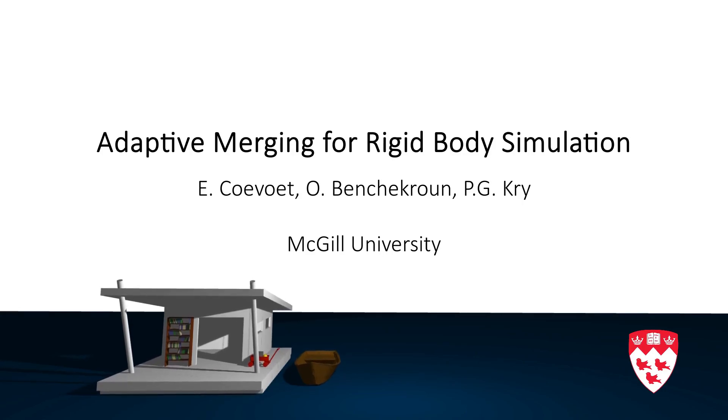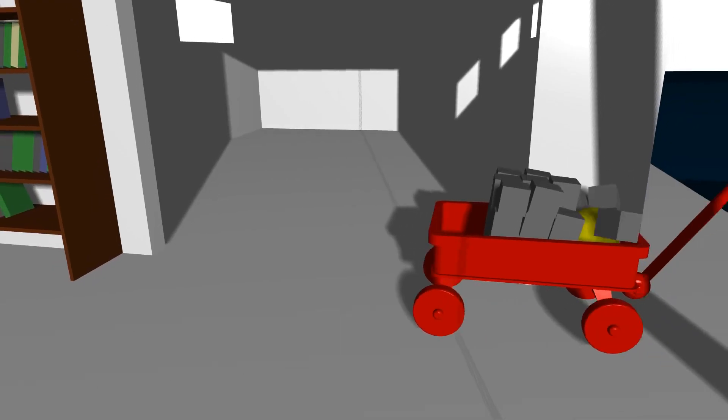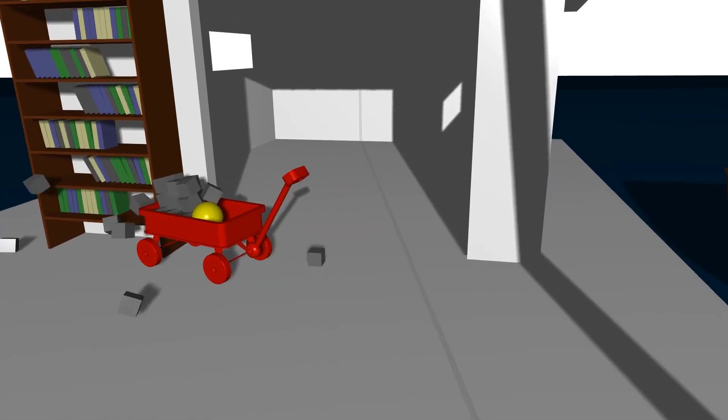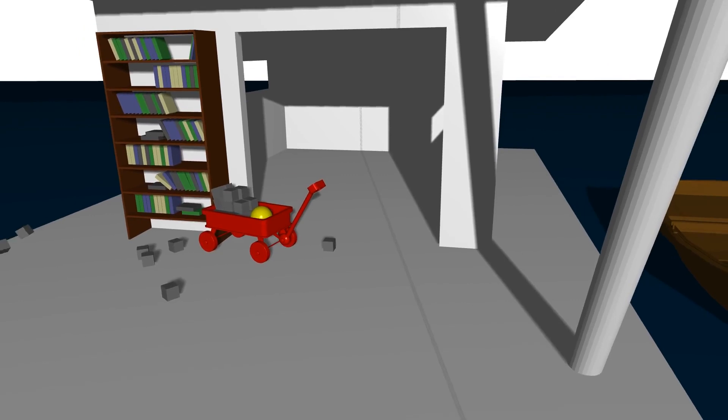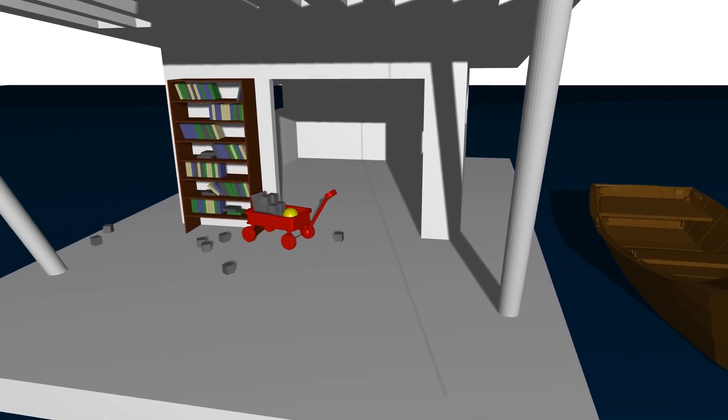We present a technique for adaptive merging in rigid body simulations. In a multibody system with contacts, determining where the contacts occur and the forces they produce are the two most computationally expensive steps.